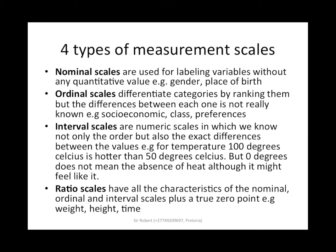Four types of measurement scales. Nominal scales are used for labeling variables without any quantitative value, e.g. gender or place of birth. Ordinal scales differentiate categories by ranking them, but the difference between each one is not really known — for example, socioeconomic status, class, or preference. If someone says they are rich or poor, that is relative to that individual; to some other person, the one you refer to as poor may be considered rich. So ordinal scales are based on the individual doing the classifying.